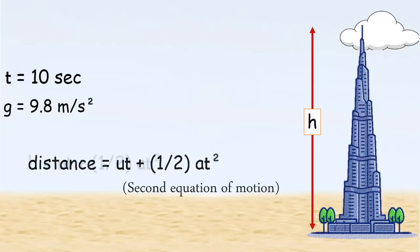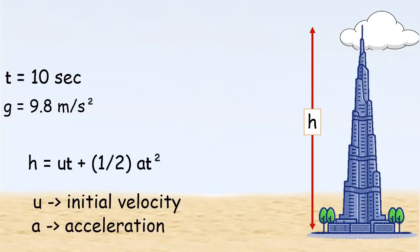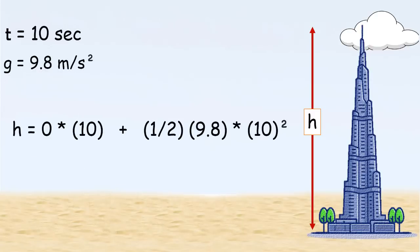Distance covered, that's h, is equal to ut plus a half at squared, where u is the initial velocity and a is the acceleration. And in this case, we know that when the coin was just dropped, its initial velocity was zero. And the acceleration here is the acceleration due to gravity, that is 9.8. Placing the values in the equation gives the value of the height.